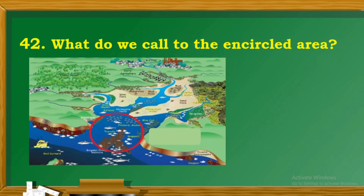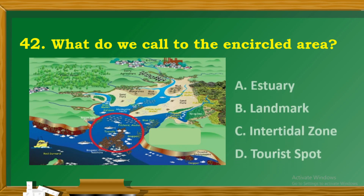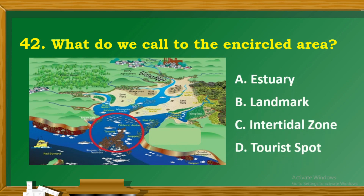Question 42: What do we call the encircled area? A. Estuaries. B. Landmark. C. Intertidal zone. D. Tourist spot.